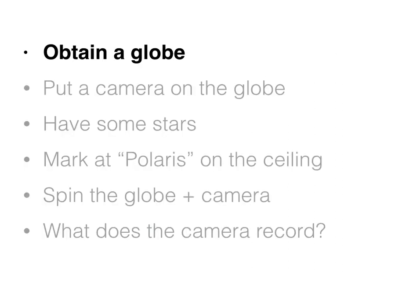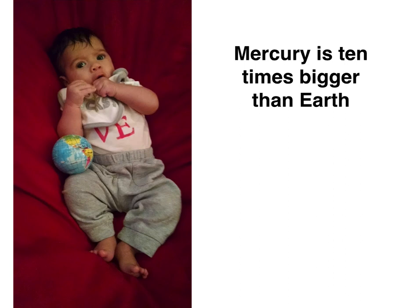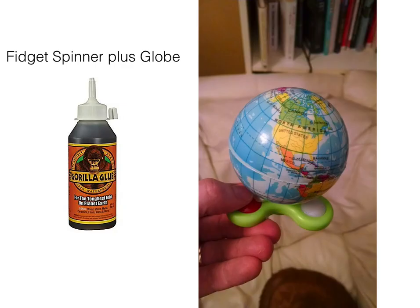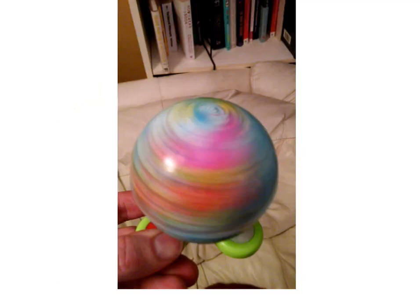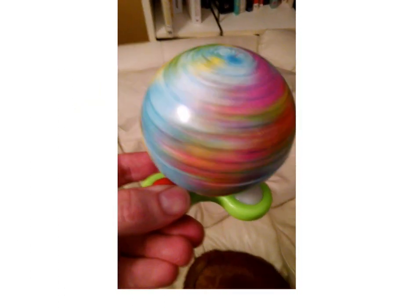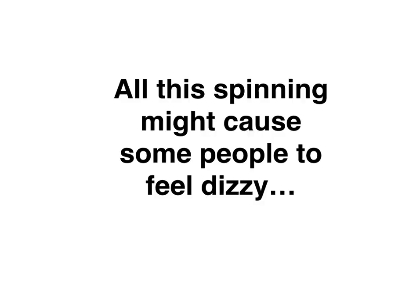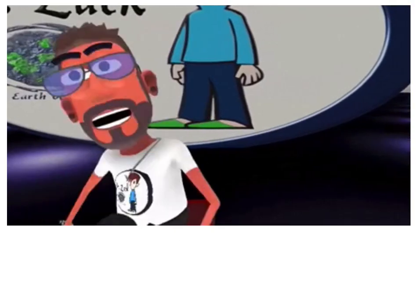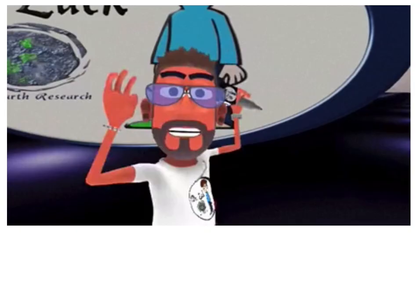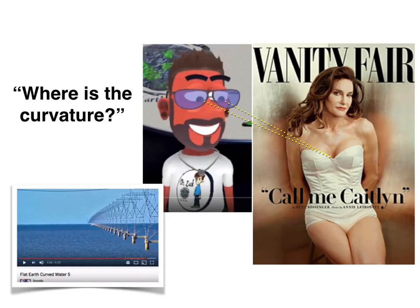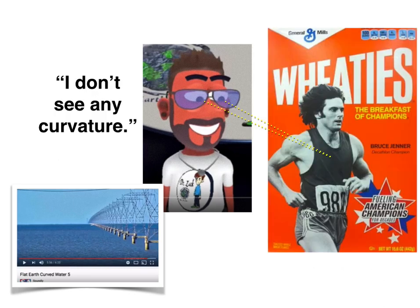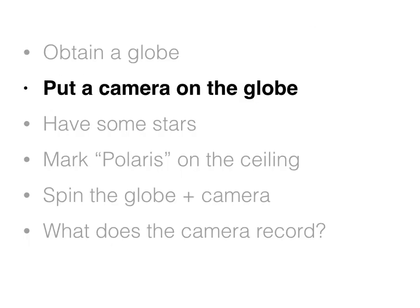So first step is to obtain a globe. I stole a globe from a small child, and then I decided to use a fidget spinner — my initial idea was to use the bearing on the fidget spinner to give it a nice spin. The problem is fidget spinners have a really, really good bearing, and this causes some people to become dizzy. Just all this dizziness causes people not to think clearly, and they might be looking right at curvature and still ask, 'Where's the curvature?' So I really don't want to confuse anybody, and we didn't use the fidget spinner.